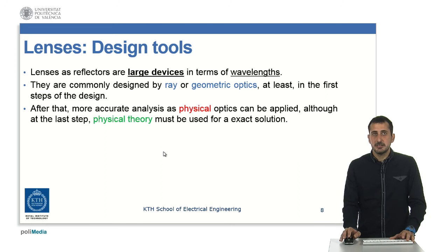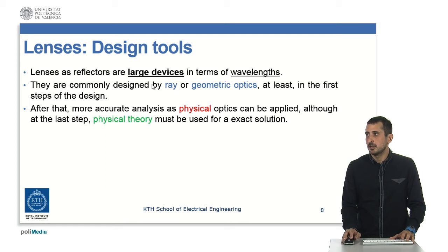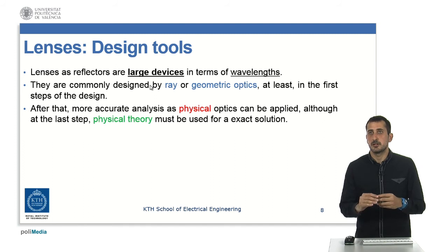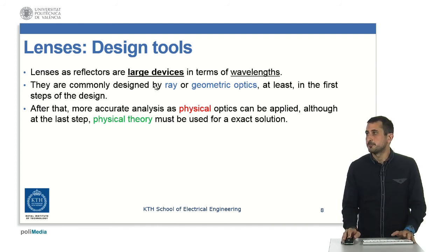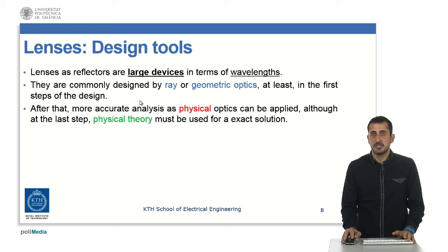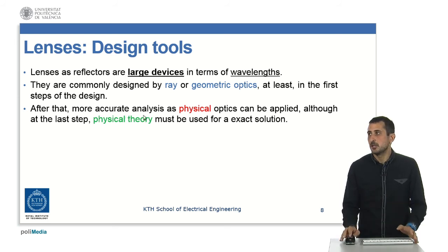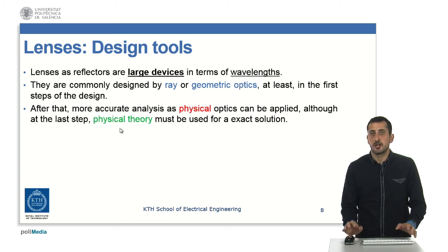When speaking about lenses, we are speaking about large devices in terms of wavelengths, similar to reflectors or arrays. We make use of larger apertures to create more directive antennas and focus better in one or different directions. To analyze these lenses, we normally use ray or geometric optics at least in the first step of design because they are simpler. But for advanced designs or the second step, we have to go to physical optics. Normally in the last step we go to physical theory for a complete exact solution.